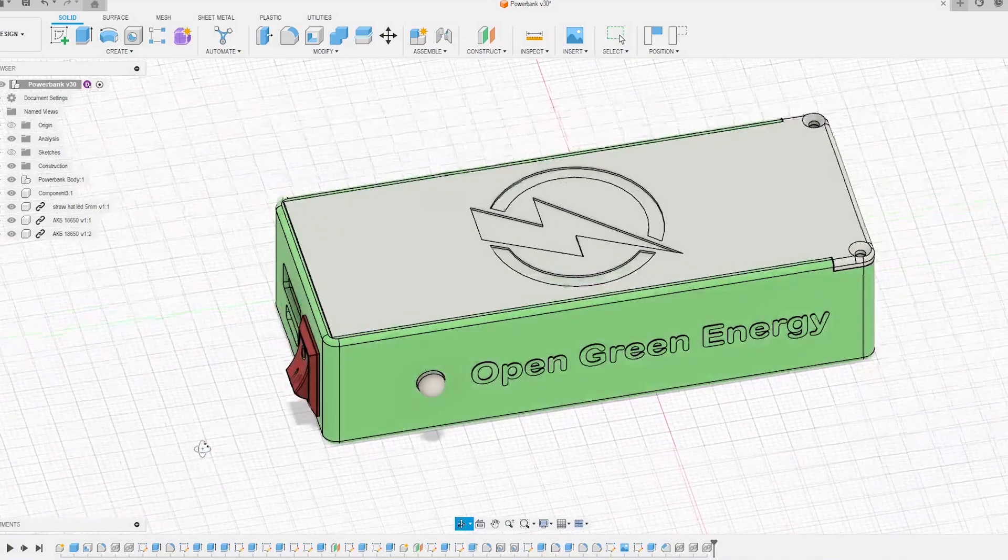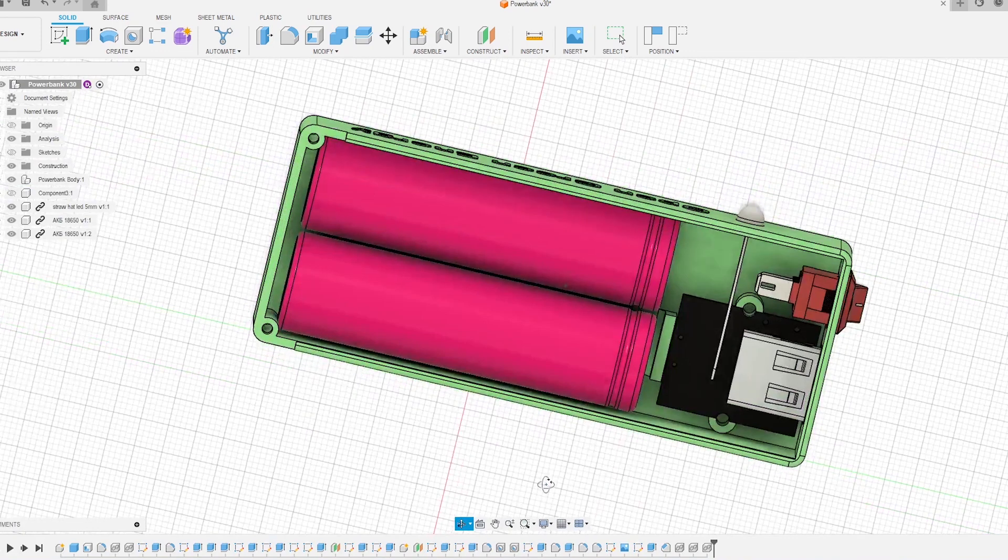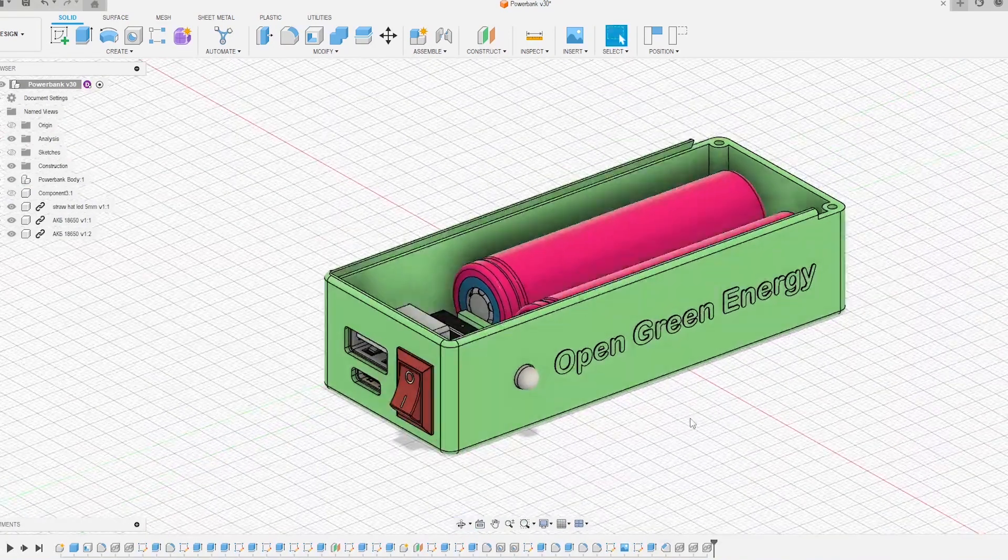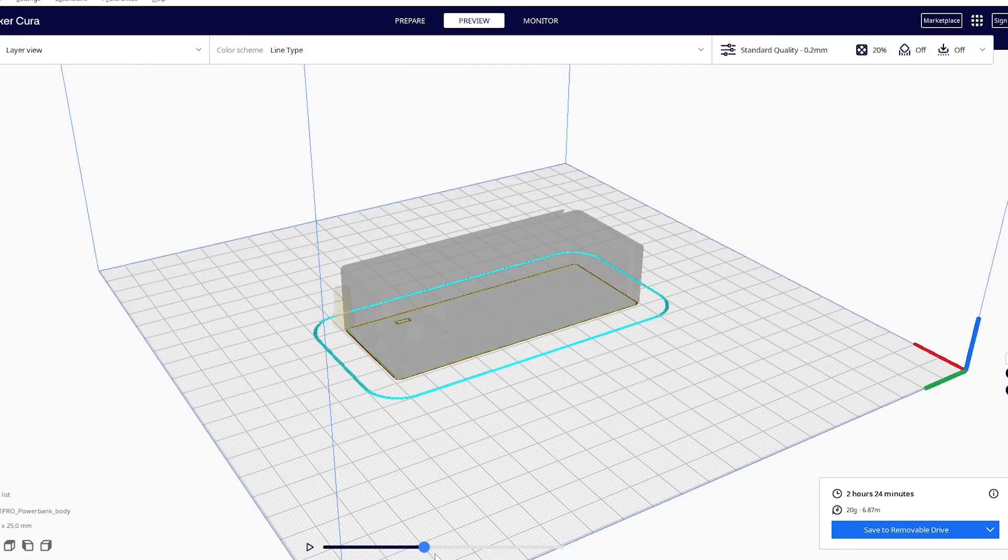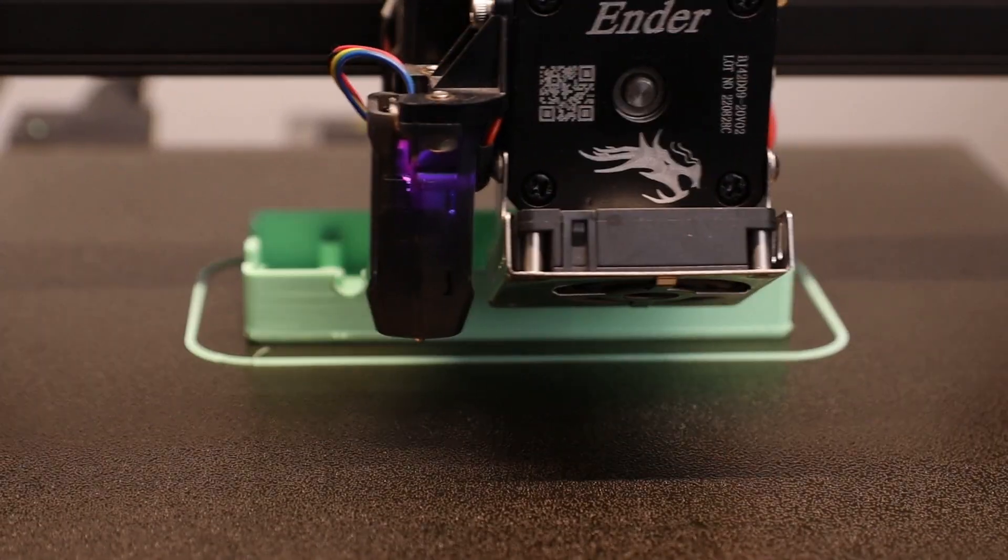I have designed a 3D printable enclosure for this project by using Autodesk Fusion 360. You can download the STL file from Thingiverse. The link is given in the video description. Then I have sliced the design on Cura and printed it by using my 3D printer Ender 3 S1 Pro.